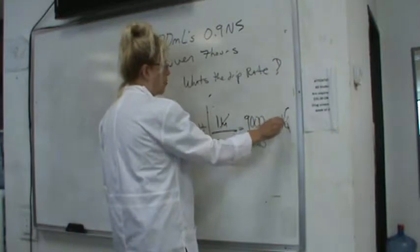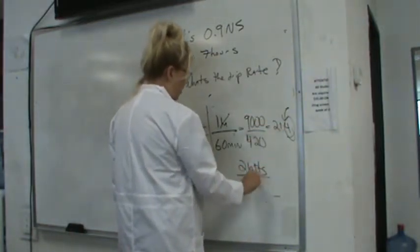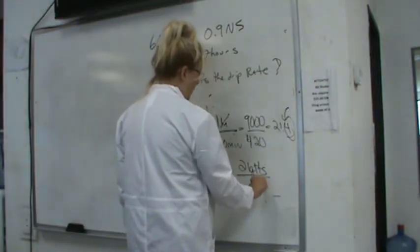And then 21, because 4 is less than 5. Good job, Lena. 21 drops per minute.